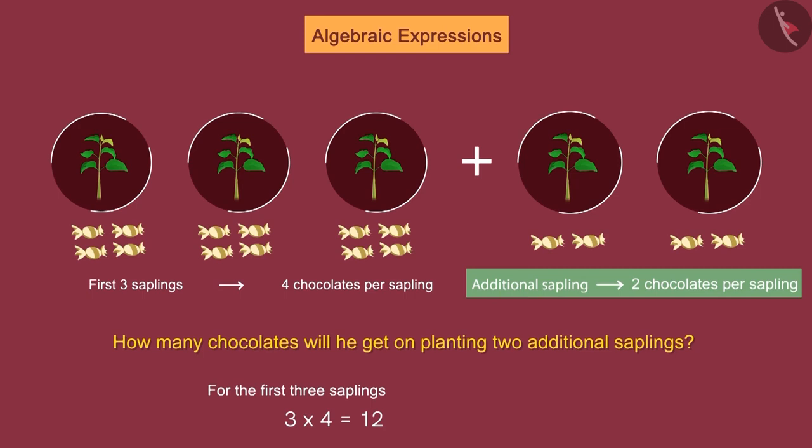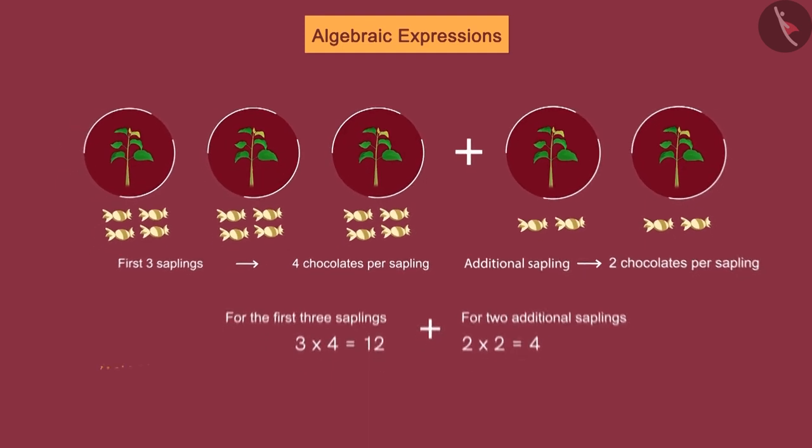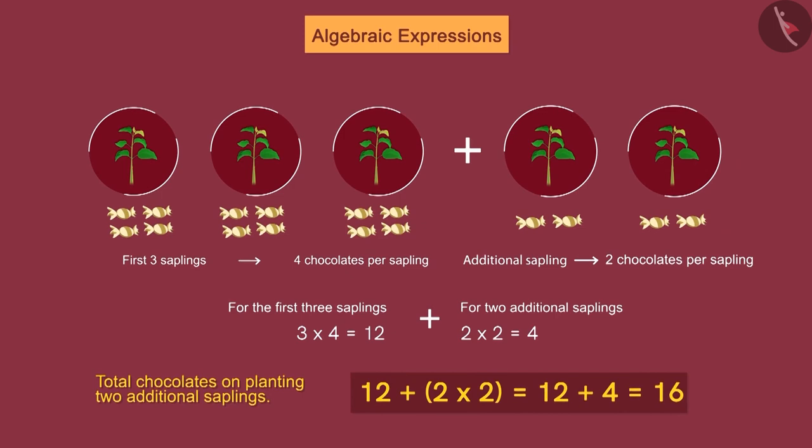Now, he will get two chocolates for planting each additional sapling, which means he will get four more chocolates for these two additional saplings. So, Raghu will get a total of sixteen chocolates on planting five saplings.